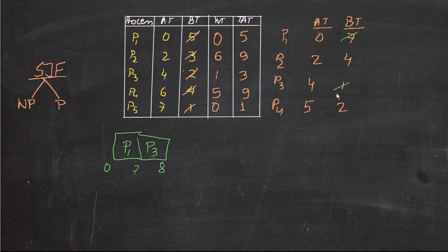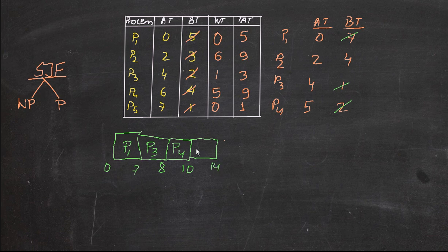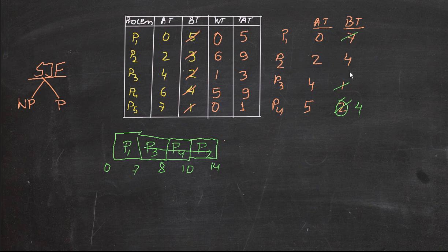P3 is done. The next shortest job is P4 with burst time 2, so we execute P4 from 8 to 10. Then we execute P2 from 10 to 14. Now, if P4 had a burst time of 4 — equal to P2 — we would still select P3 first, and then select P2 over P4 because P2 arrived in the CPU first. When burst times are equal, we give priority to the process with the earlier arrival time. The waiting time is always visiting time minus arrival time, and average waiting time is the sum of all waiting times divided by the number of processes.